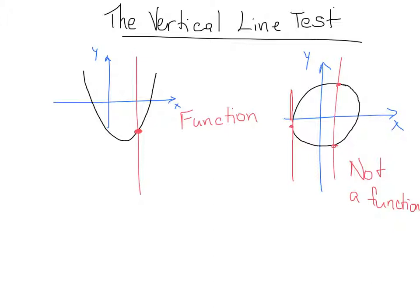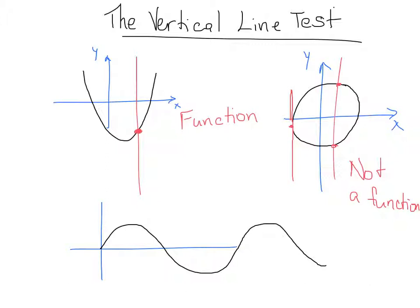Let's try one more. Here we have a wide graph going across the coordinate plane. Can I draw a vertical line anywhere that touches this graph more than once? No — it touches only once, only once, only once, and only once. This is actually a function.